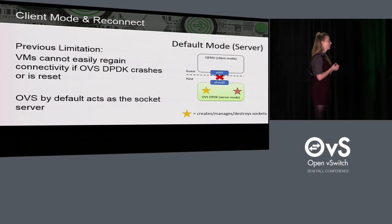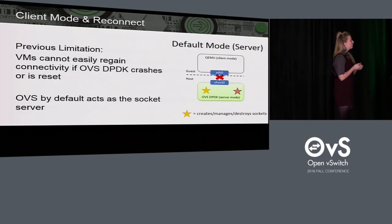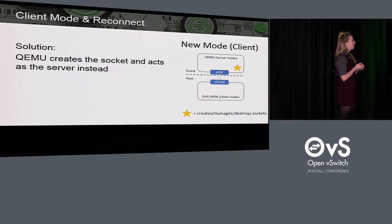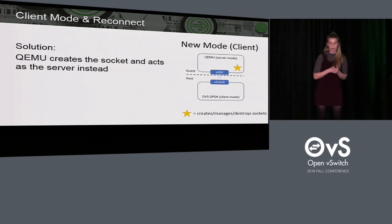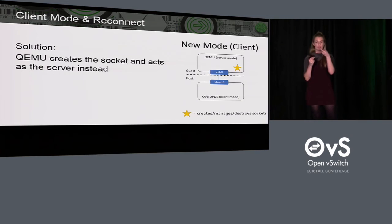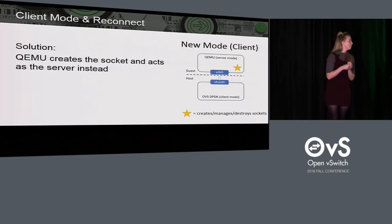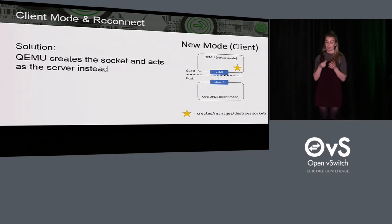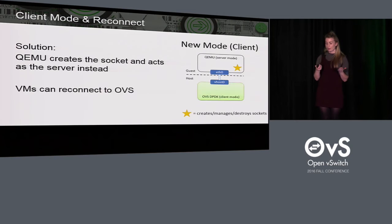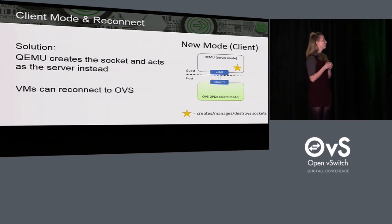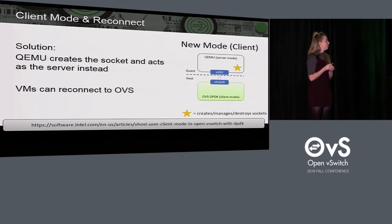The only way to regain connectivity is to reboot, and that's not always an option. To address this issue, a new mode was introduced called client mode, where the client-server model is flipped. QEMU becomes the socket server and OVS DPDK becomes the client who connects to it. So if OVS DPDK goes down and we bring it back up, it can reconnect to the socket without any trouble because it's managed by QEMU. There's another article on software.intel.com showing how to configure this in Open vSwitch.